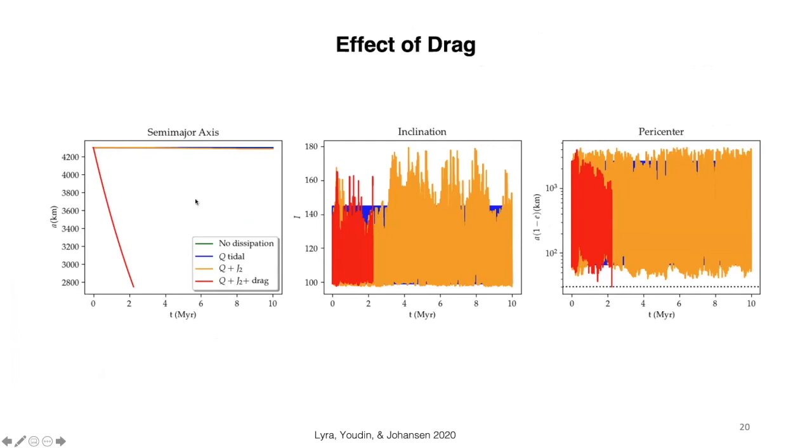These are the four models that I showed before. The blue is for Kozai plus the induced tides. The yellow is the Kozai plus induced tides plus the permanent quadrupole. And you already see here a difference in behavior between the blue, which is a very regular one, and the J2, the permanent quadrupole, which starts to do some extra oscillations on top of it because it is affecting the Kozai.